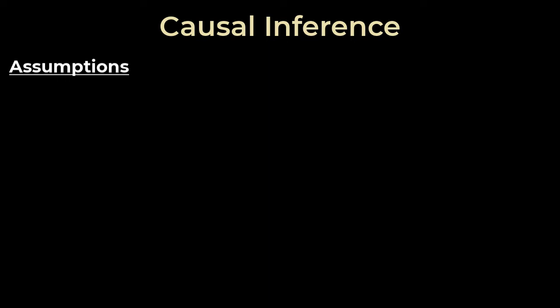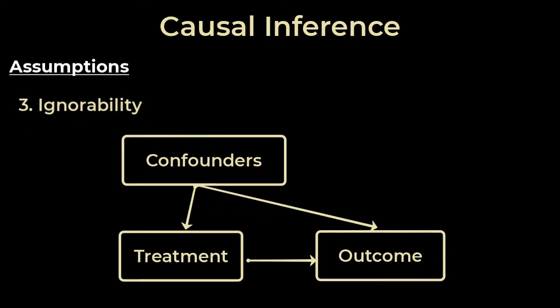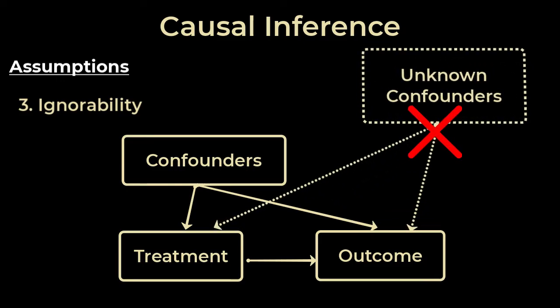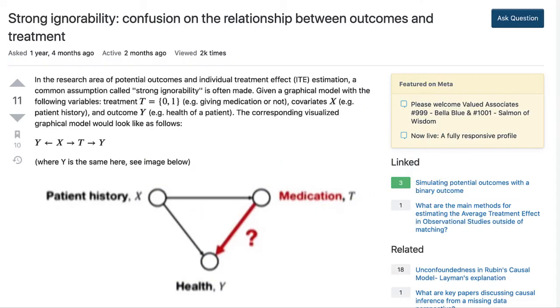A third assumption we're going to make is ignorability. This assumption says that there exist no additional confounders that have an effect on the treatment and the output. This is an extremely important assumption; otherwise, even if we see the treatment group doing better, we wouldn't be able to pin a cause, since the cause for getting well or sick could be pinned on potentially an unmeasured confounding variable. So we assume we have no missing confounders. This is such an important topic that I'll link more details down in the description below.